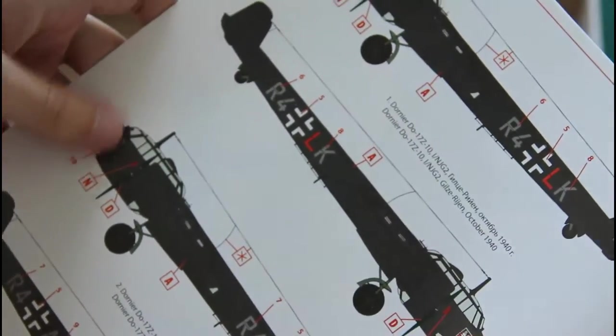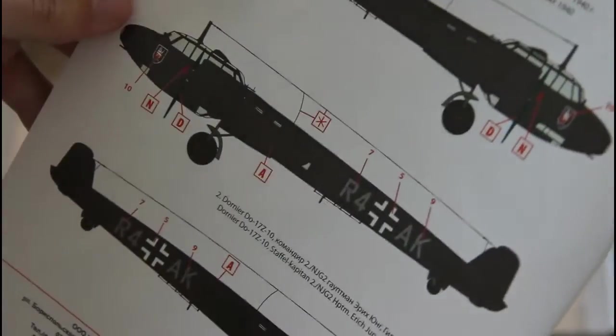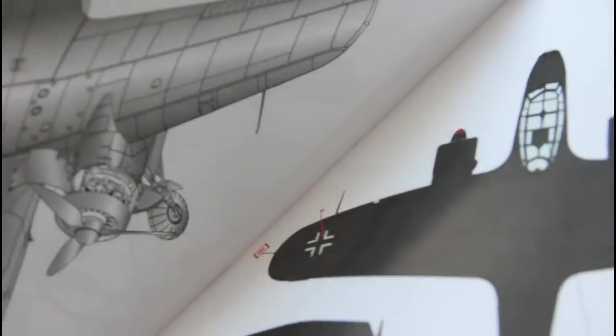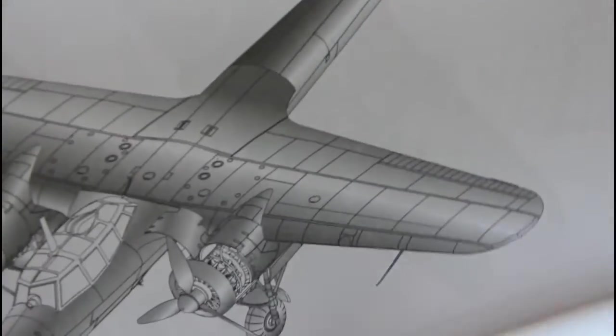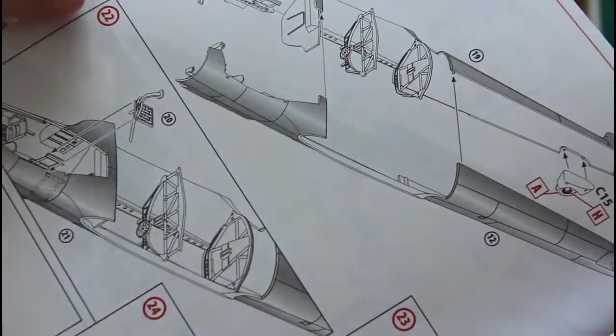On the last page we have marking options. There are two of them included. Here you can see a 3D picture of the assembled model. And the assembly process is shown with help of these 3D pictures.